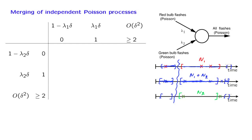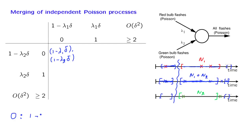For the merged process, we will have zero arrivals if and only if we have zero arrivals in the red process and zero arrivals in the green process. Because the two processes are independent, the probability of this is the product of the individual probabilities. Multiplying those two terms and throwing away the delta squared term, which is negligible, we see that this event happens with probability 1 minus (lambda 1 plus lambda 2) times delta.